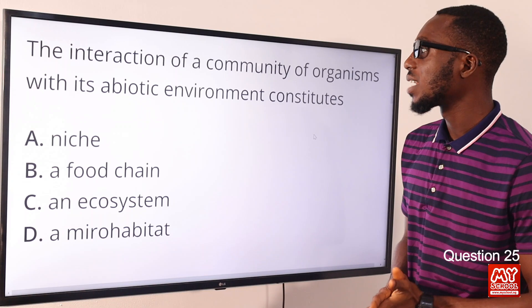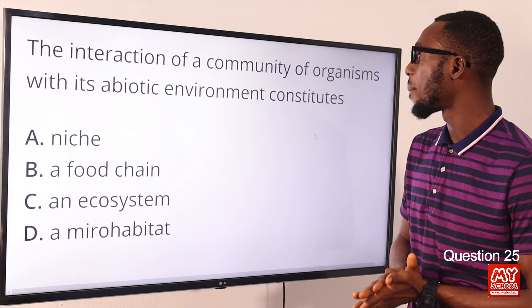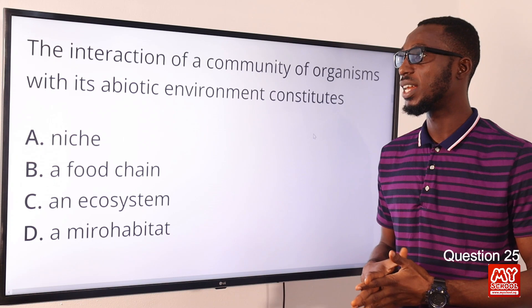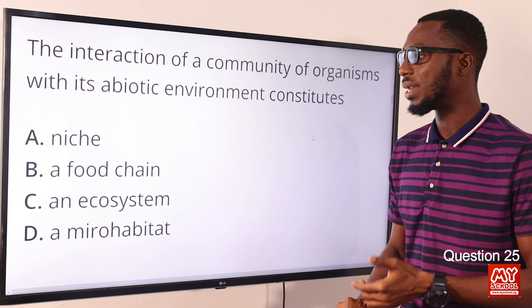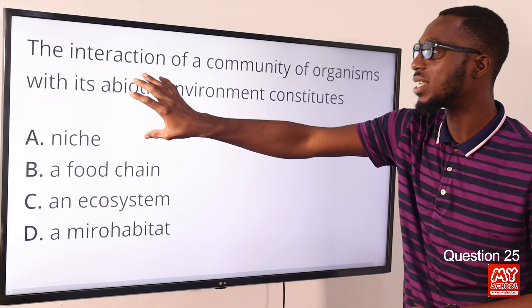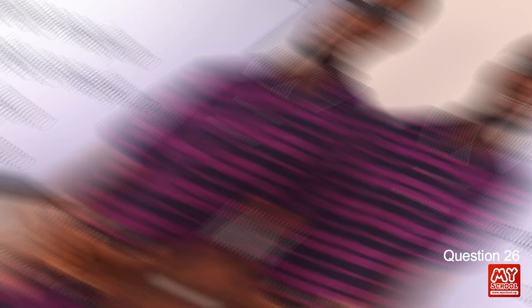Question 25: The interaction of a community of organisms with its abiotic environment constitutes an ecosystem. An ecosystem is a self-supporting unit comprising the biotic (living) component and the abiotic (non-living) component. A community refers to all the populations of living organisms living together in a particular place. So the correct option is option C for an ecosystem.